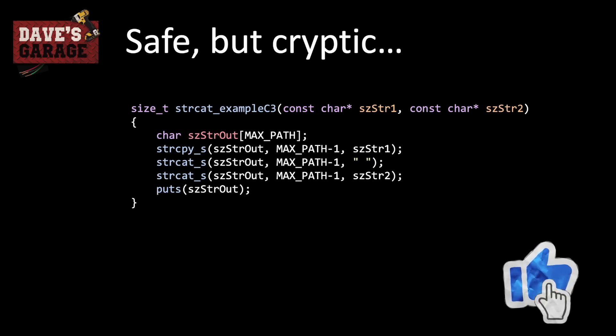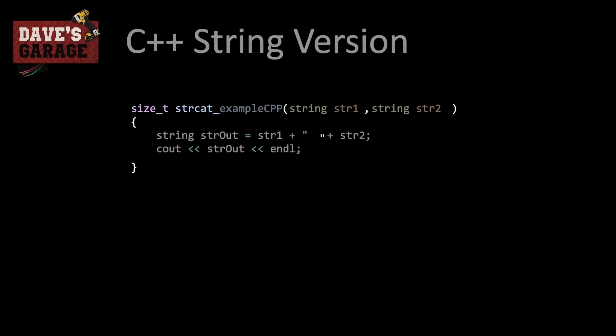Unfortunately, this C code is rather cryptic — you have to pass maxpath minus 1, and it is a little weird. If we jump into C++, we see it gets immensely simpler. str1 and str2 are simply combined with a space in between and output to cout using the stream operator, followed by an endline. All of the memory management is done by the string class itself, and as long as you have heap or virtual memory available, this function will always succeed.